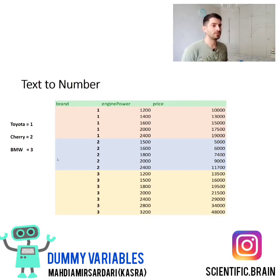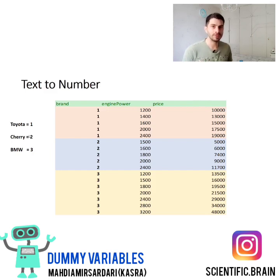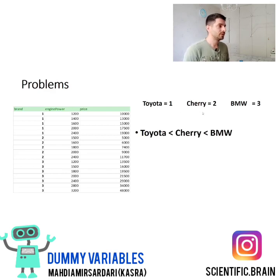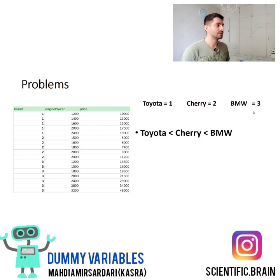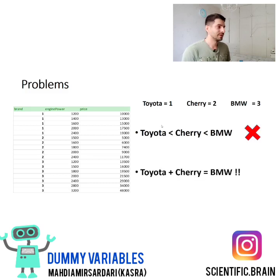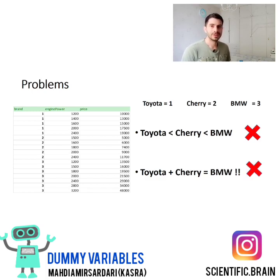Suppose that we convert the text to numbers — we assign an integer number for each category. But can it solve the problem or not? If we assign integer numbers, we will create an ordering. For example, if BMW equals 3, that means BMW is greater than Cherry, and Cherry equals Toyota. So it's incorrect. From another perspective, the summation of Toyota and Cherry would equal BMW, which is also incorrect. So assigning integer numbers to each category would not work here.